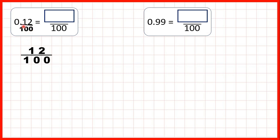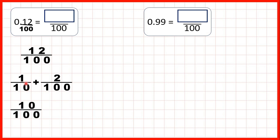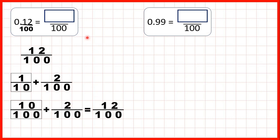To make it a bit clearer, let's think about what 0.12 really means. The 1 is in our tenths place value column, and the 2 is in our hundredths. If you put that together, you get 12 hundredths. That's because we can find an equivalent fraction for one tenth which has a denominator of 100. One tenth is the same as 10 hundredths, because 10 times 10 is 100 and 1 times 10 is 10. So if you add the two hundredths to that, you get 12 hundredths.